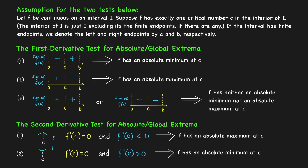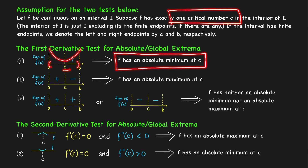When we apply the first derivative test, suppose the interior of the interval I is the open interval (a, b) with finite endpoints, and there is only one critical number in that interior — call it c. If the sign of the derivative changes from negative to positive at c, meaning f is decreasing on the left and increasing on the right of c, then we can conclude we have an absolute minimum at x = c, because there is only one critical number in the interior of interval I.